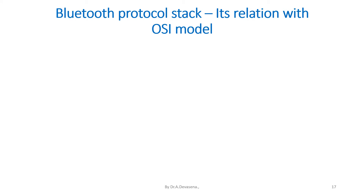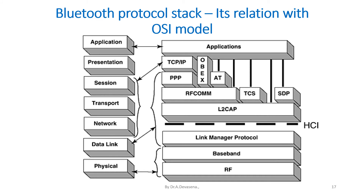Let us see the Bluetooth protocol stack and its relation with the OSI model. The physical layer of the OSI is linked to the RF/baseband stack of Bluetooth. The data link layer of the OSI model links to the upper layers. The network, transport and session layers of OSI link to the TCP/IP block in Bluetooth. The application layer of OSI has a direct link with the application layer of Bluetooth.